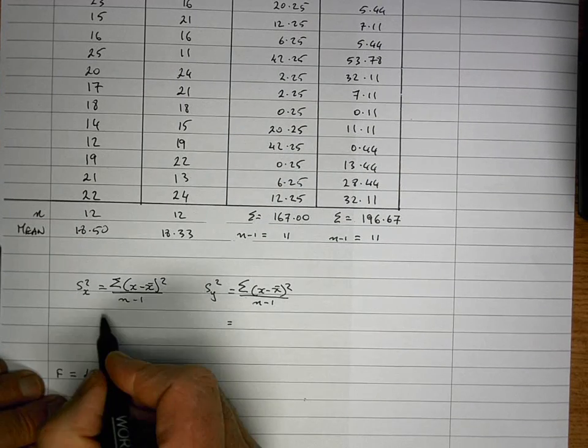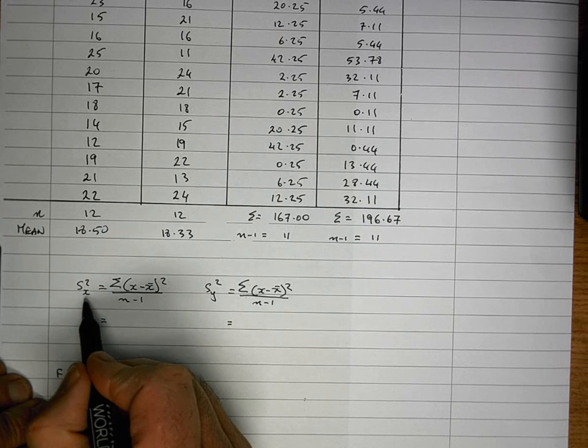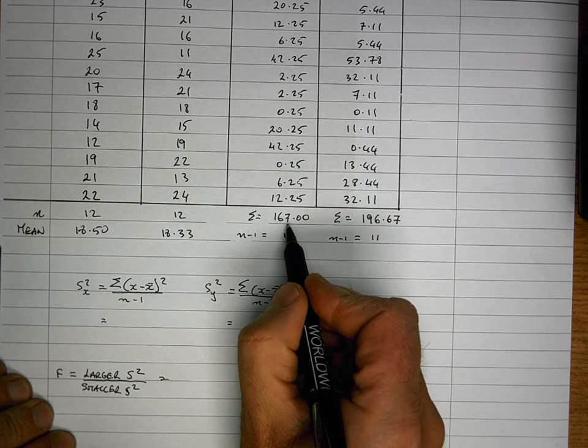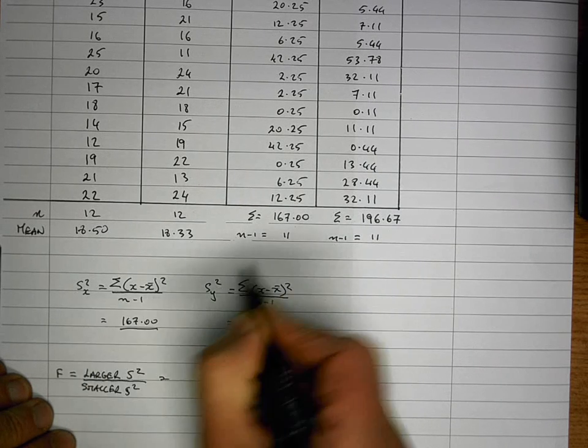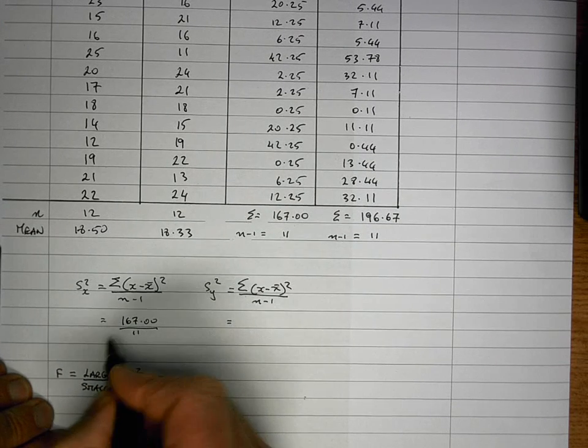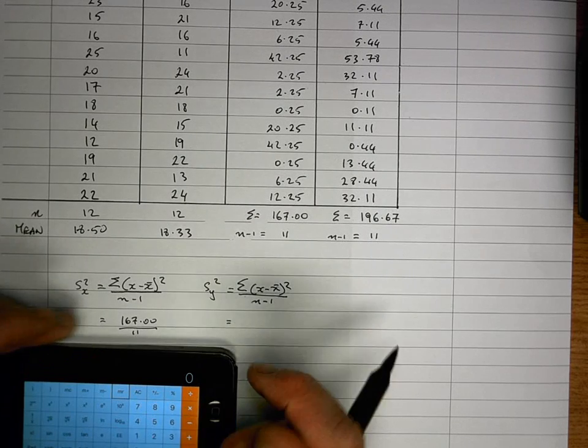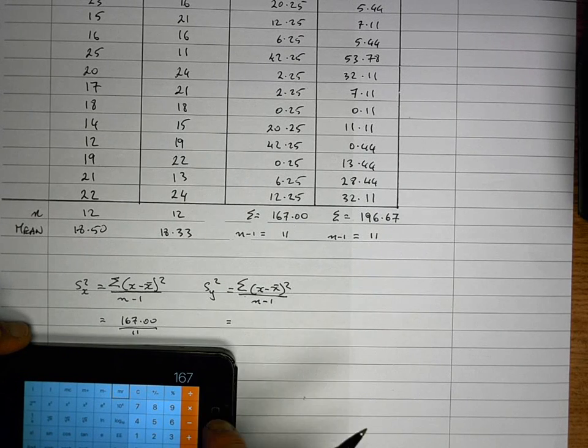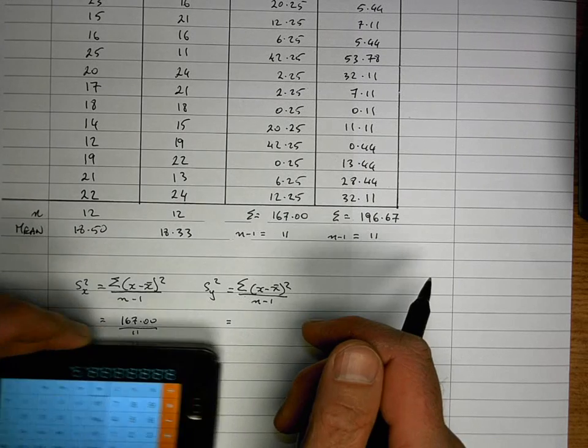So now if I plug these values into my formula for variance. So my variance s squared for the group of x is going to be this value here. 167.00 divided by 11. And that is equal to, so let's work that out here. So 167 divided by 11. So I get a value of 15.18.